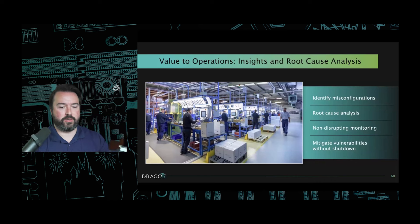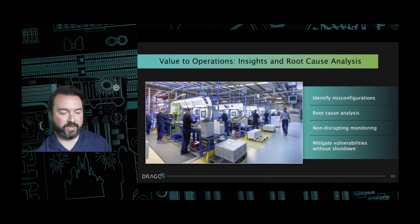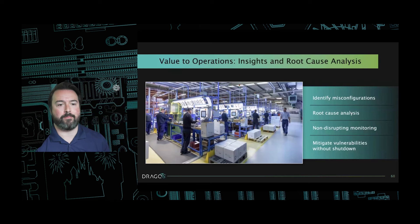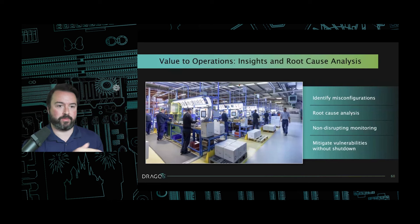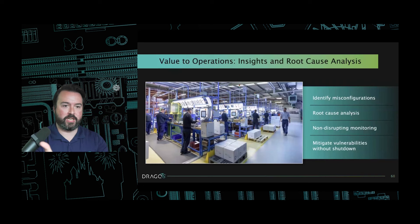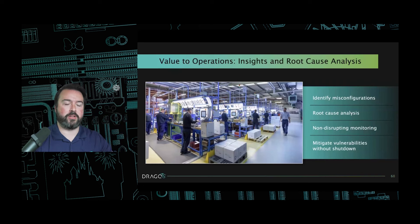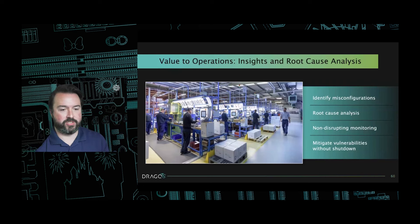You can mitigate vulnerabilities without shutdown. The perfect example I gave earlier — moving the mode switch from remote to run mitigates the vulnerability while you continue running to your next maintenance window. Then you can evaluate what fixes or remediations you need to put in place in your control system environment.